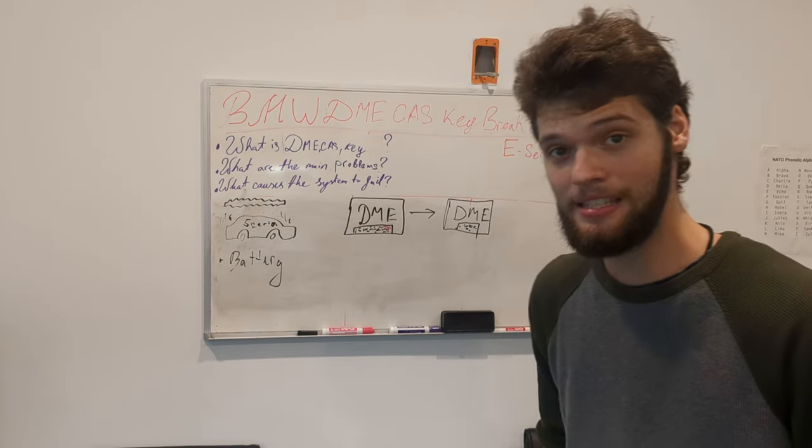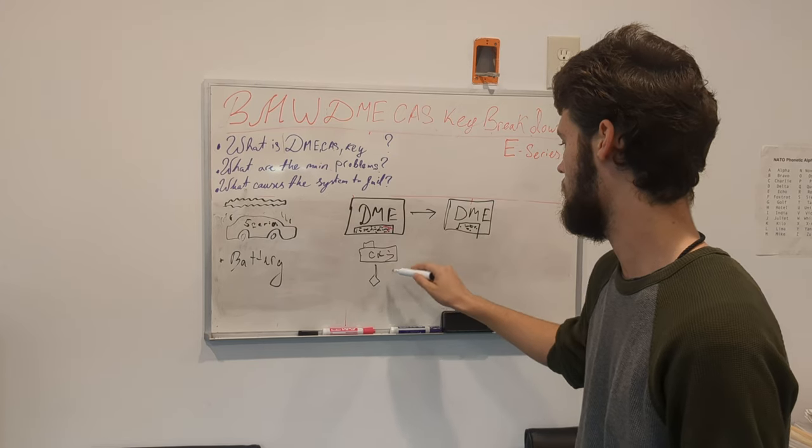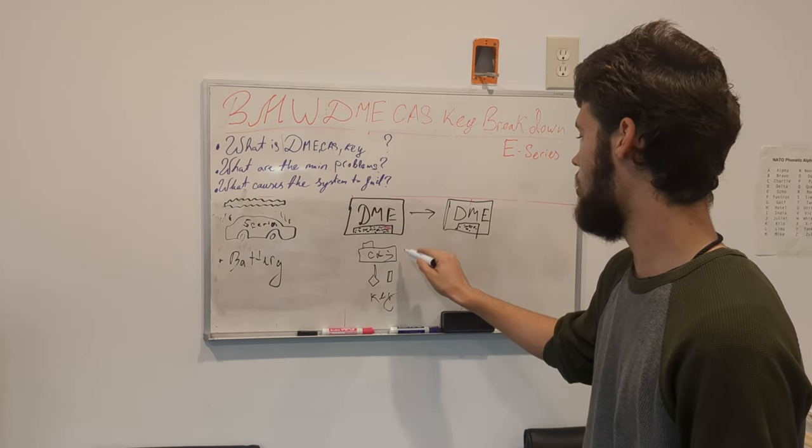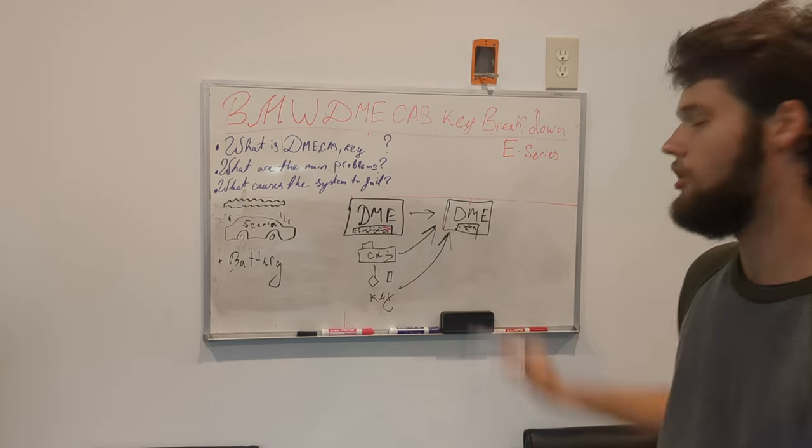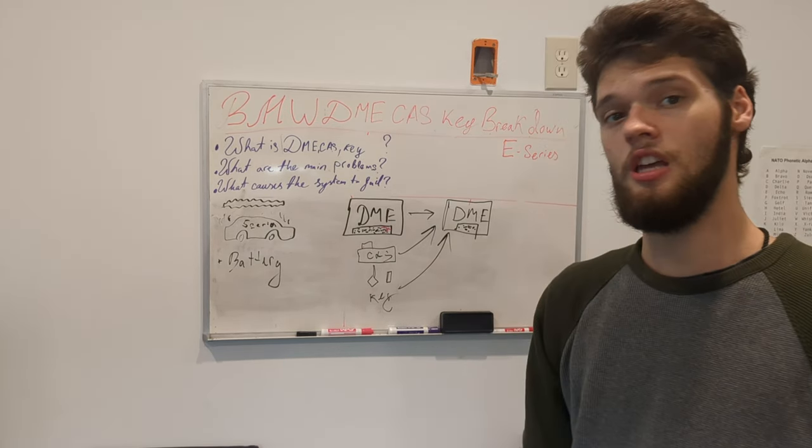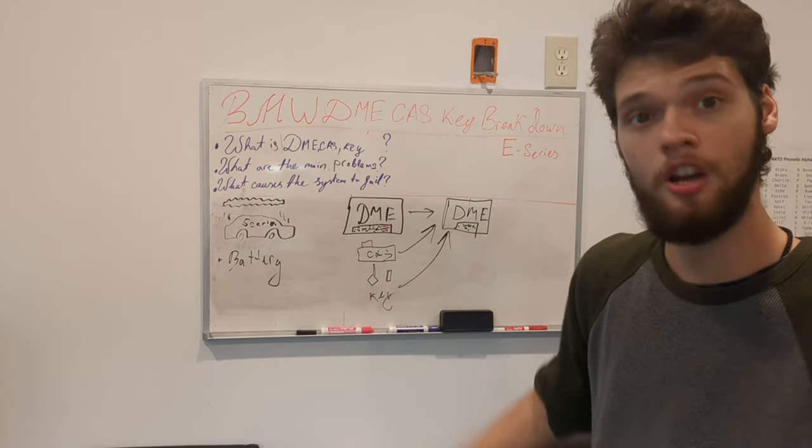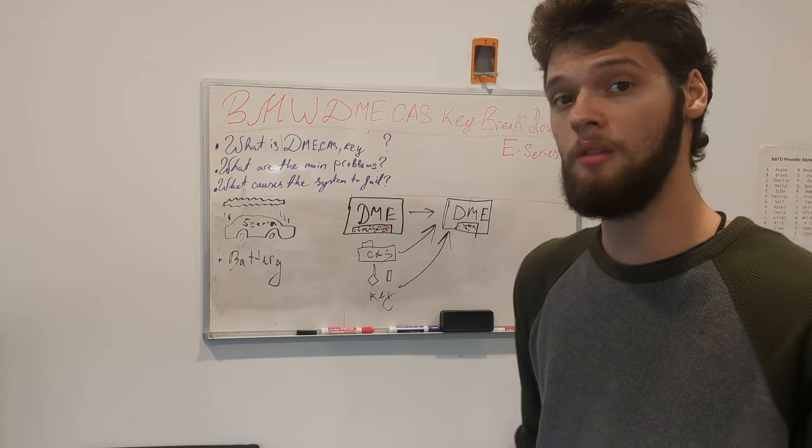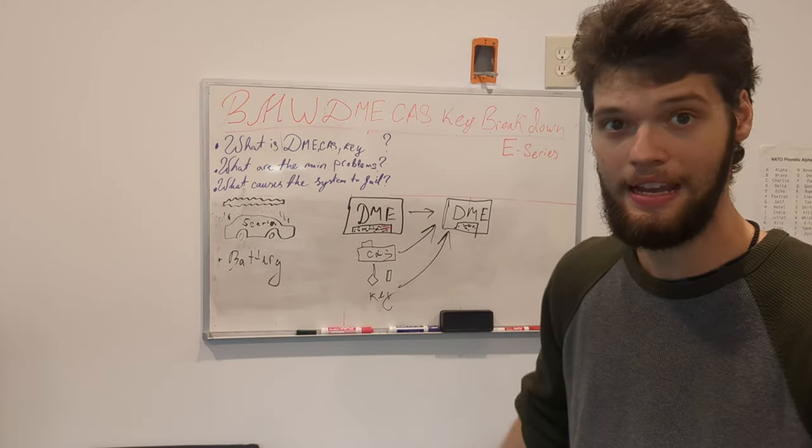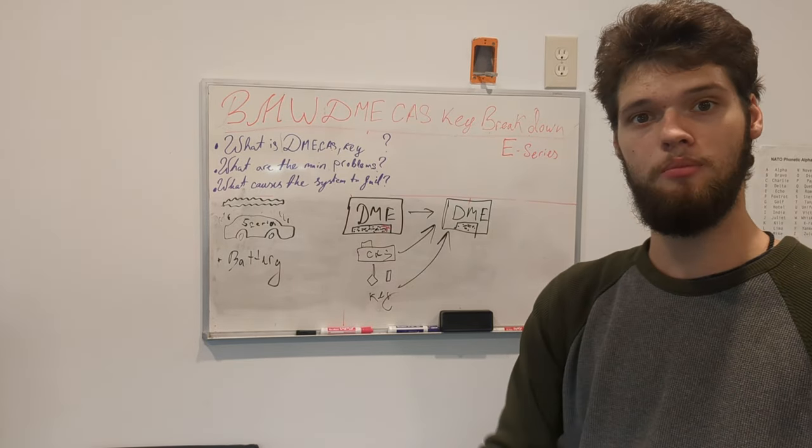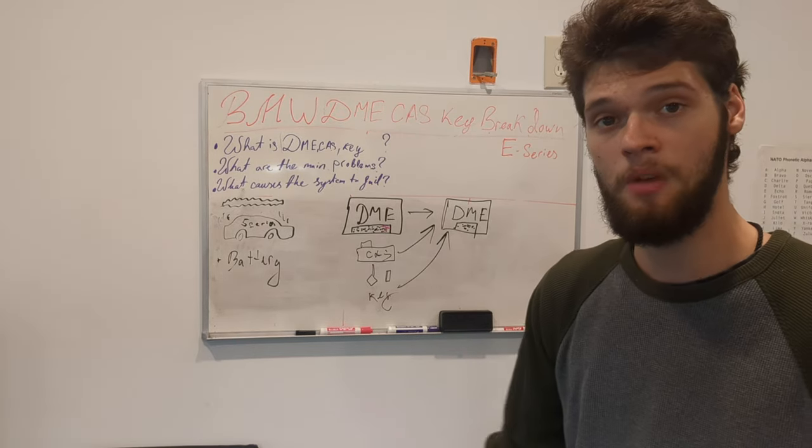All the information with the CAS and the key, all the information gets transferred to the new DME, if it's done properly. After this process is done, and the information is transferred, as long as you had the original DME working before, what you got inside of it, and I'm talking about the CAS and the key, if you were able to start the car, then you should have no problem starting the car on the replacement module.